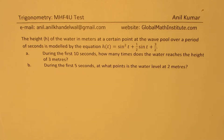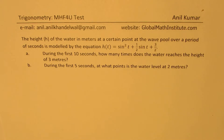The question is: the height h of the water in meters at a certain point at the wave pool over a period of seconds is modeled by the equation h(t) = 2sin²(t) + ½sin(t) + 3/2. During the first 10 seconds, how many times does the water reach the height of 3 meters? And part B is: during the first 5 seconds, at what points is the water level at 2 meters?